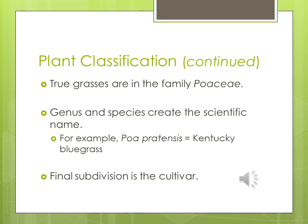Your true grasses are in the family Poaceae. Poaceae is the family of true grasses. The genus and species create the scientific name. For example, Poa pratensis is your Kentucky bluegrass — one of my favorite grasses. A final subdivision is the cultivar.